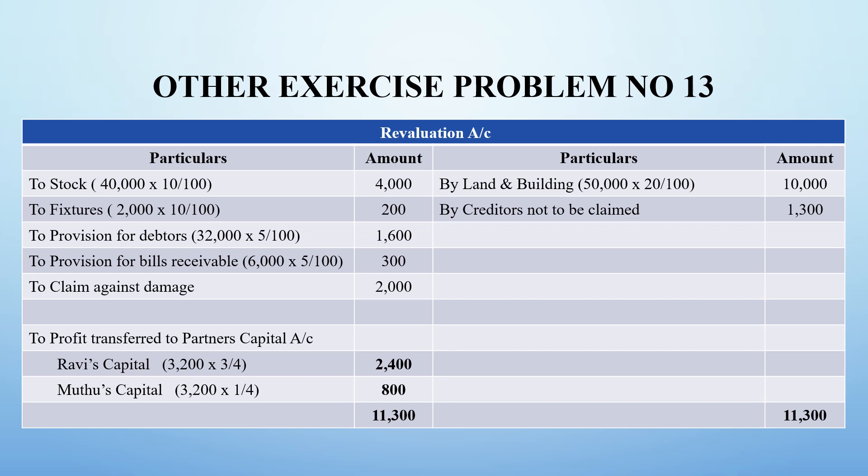The first thing we have to prepare is the revaluation account. Stock and fixtures are to be reduced by 10%. Stock value is Rs. 40,000 and 10% of that is Rs. 4,000. Fixtures are Rs. 2,000 and 10% of that is Rs. 200.